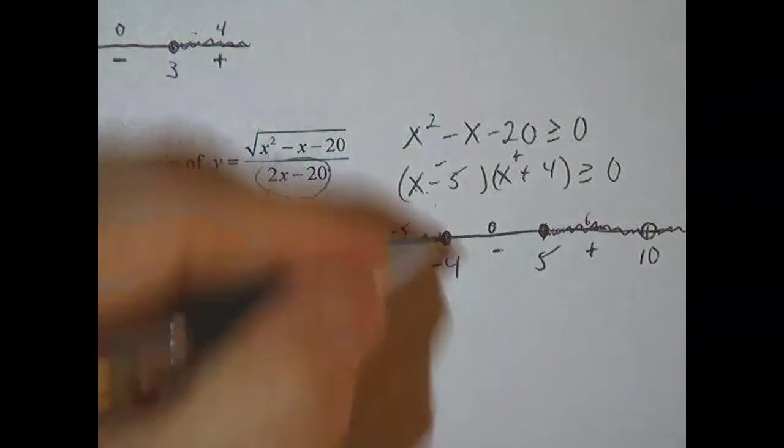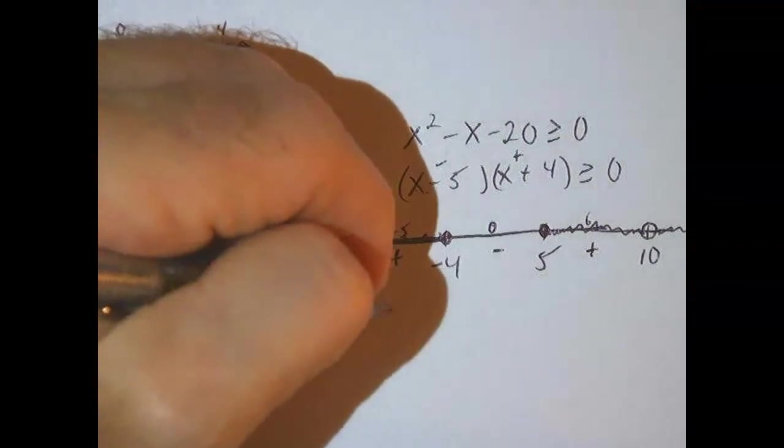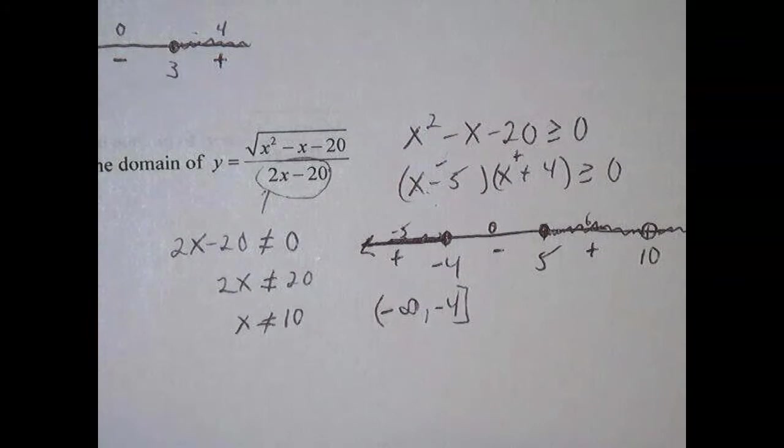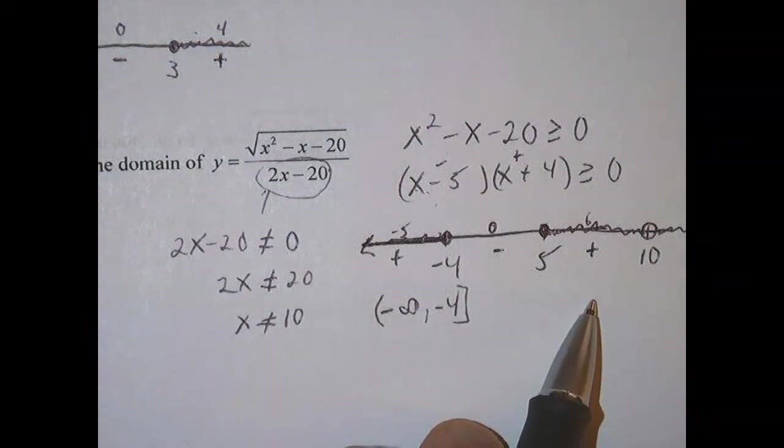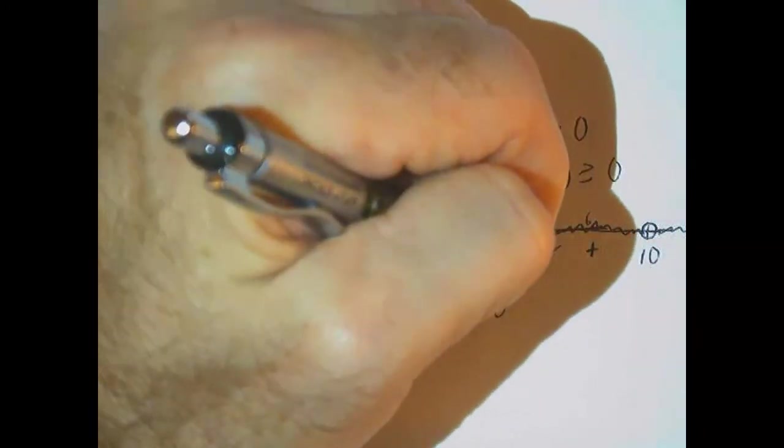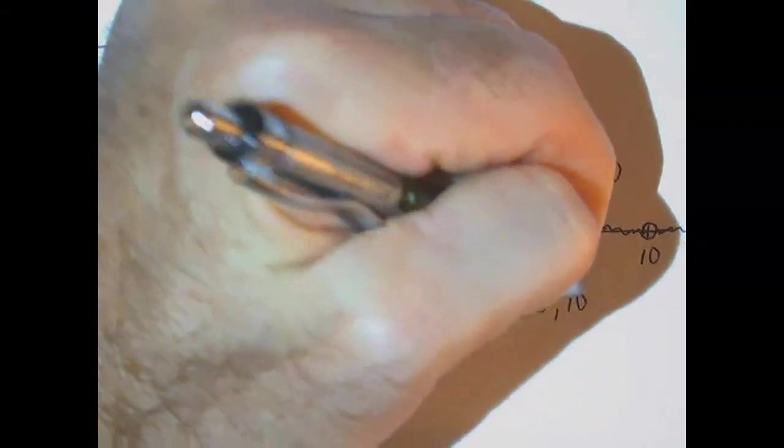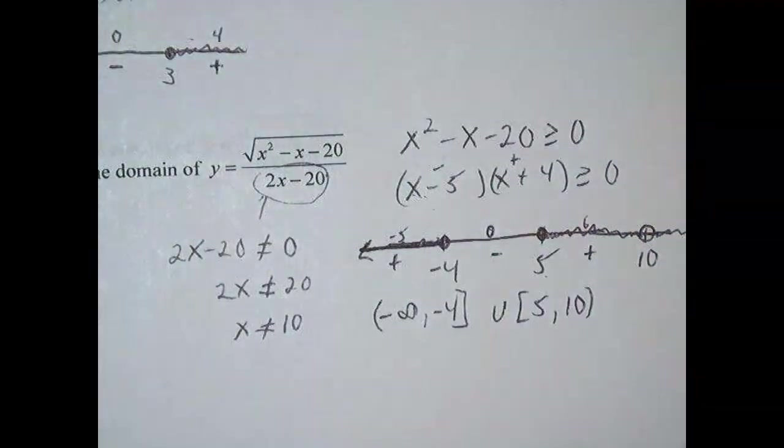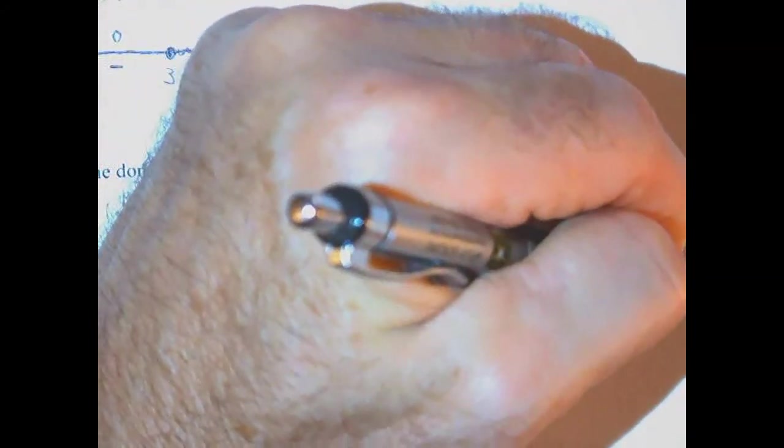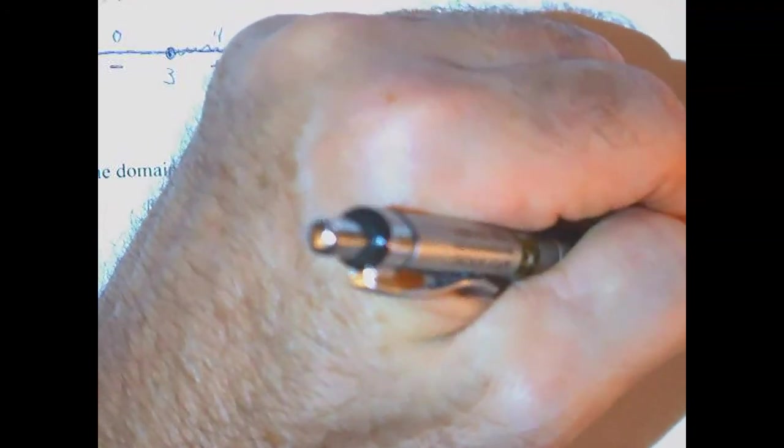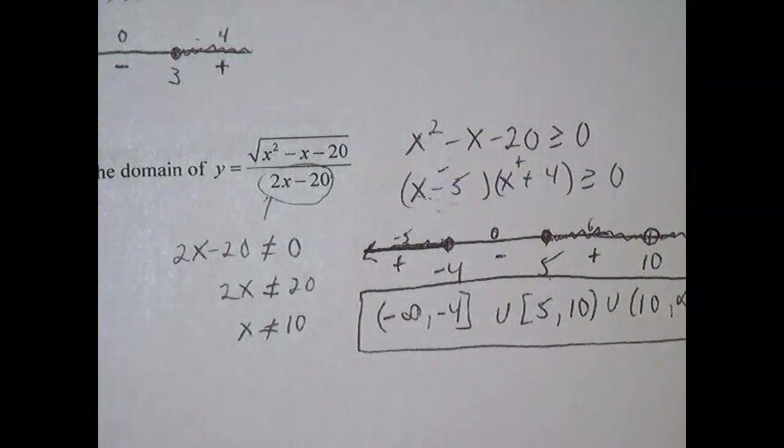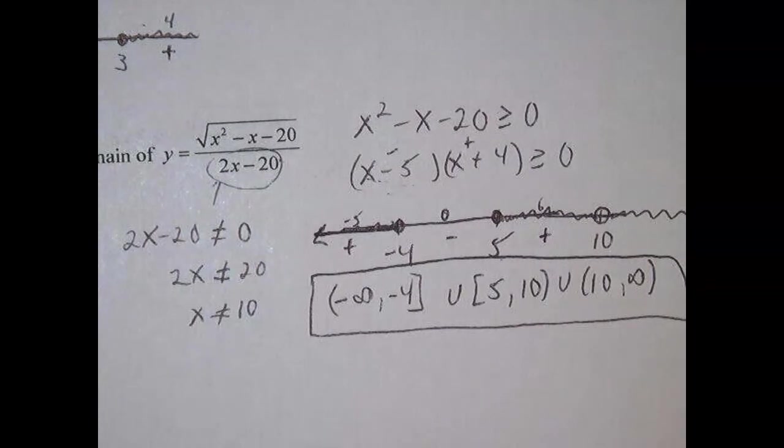It goes on forever. So we've got one interval here going from (-∞, -4] including -4. We've got another interval here that goes from 5 to 10 including 5 but not 10. So union with [5, 10). And we've got the third interval on the other side of 10 that goes to infinity, so we've got (10, ∞). And that's the domain of this function. Okay, hope you found this helpful.